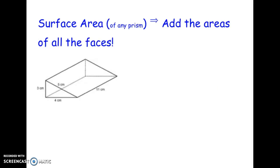Okay, let's look at surface area. Surface area is a little bit more complicated again, but to find the surface area of any prism, you can just add the areas up of all the faces. So in this case, we're going to want to look at what the different faces are.